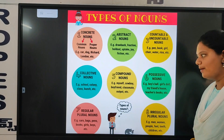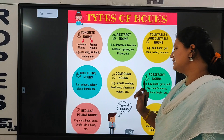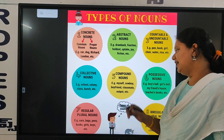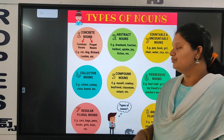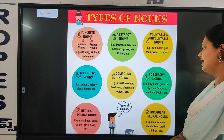Next one — compound nouns. These are nothing but myself, cowboy, boyfriend, and classmate. These are the compound nouns.